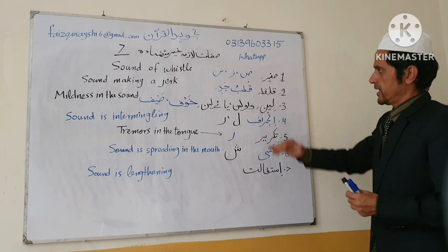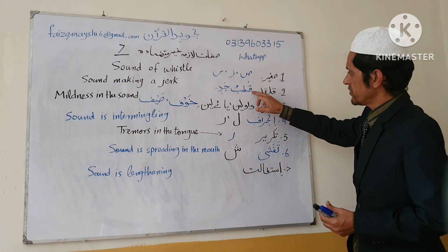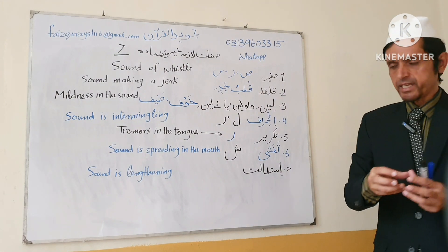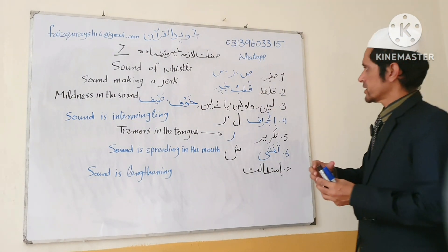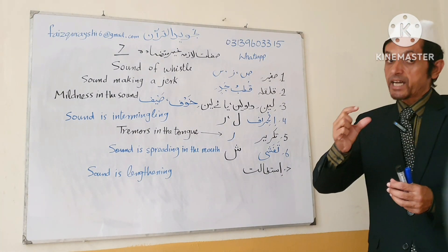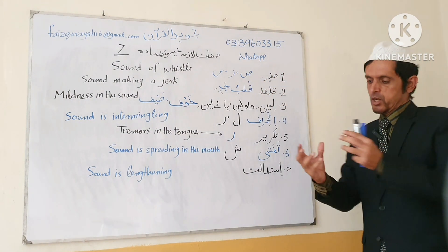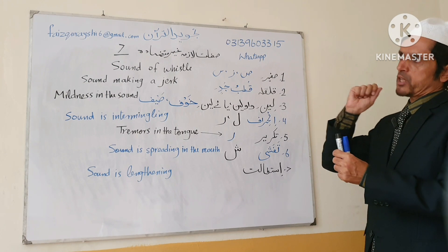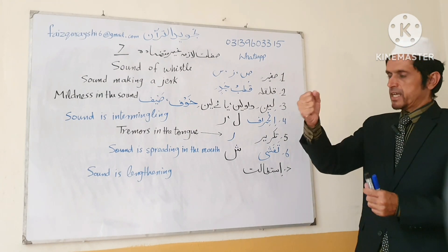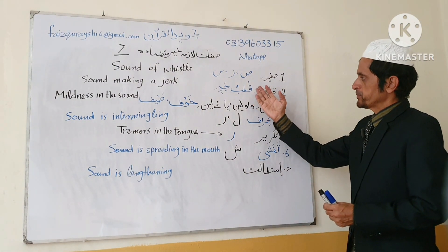Number two is Qalqala. Qalqala is a characteristic found in five letters: Qaf, Ta, Ba, Jim, Dal. When these letters have sukoon, there is a jerk in the sound — like throwing a ball on a wall and it comes back to you. It creates a sort of jerk when we articulate these letters. For example: Haqq, At, Ab, Lahab — you can hear the jerk in each.